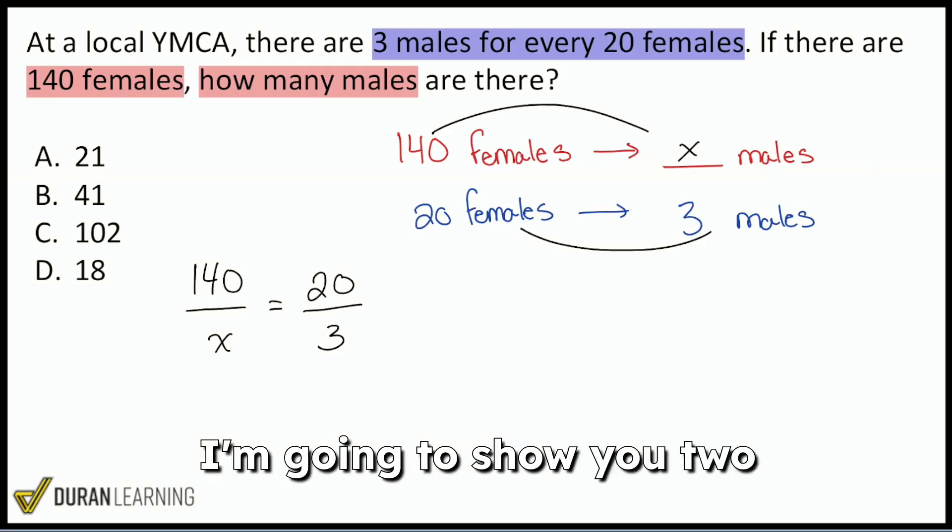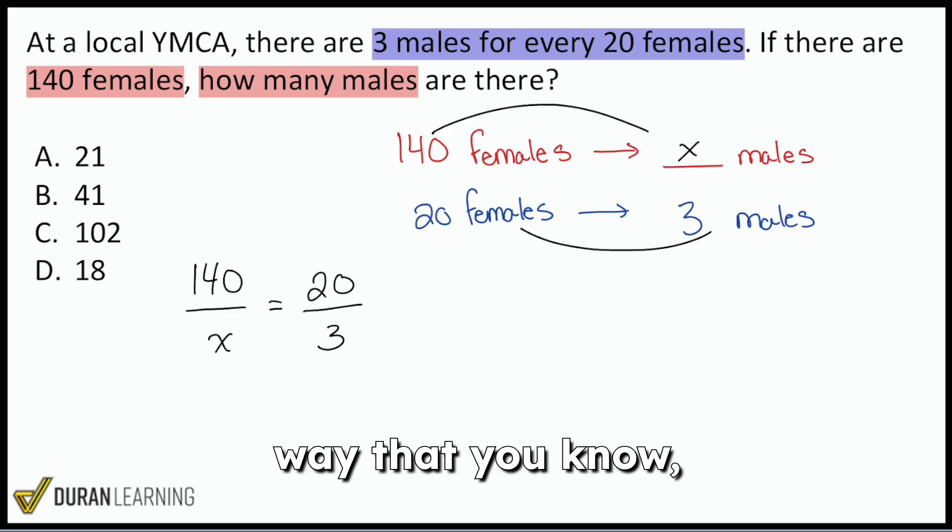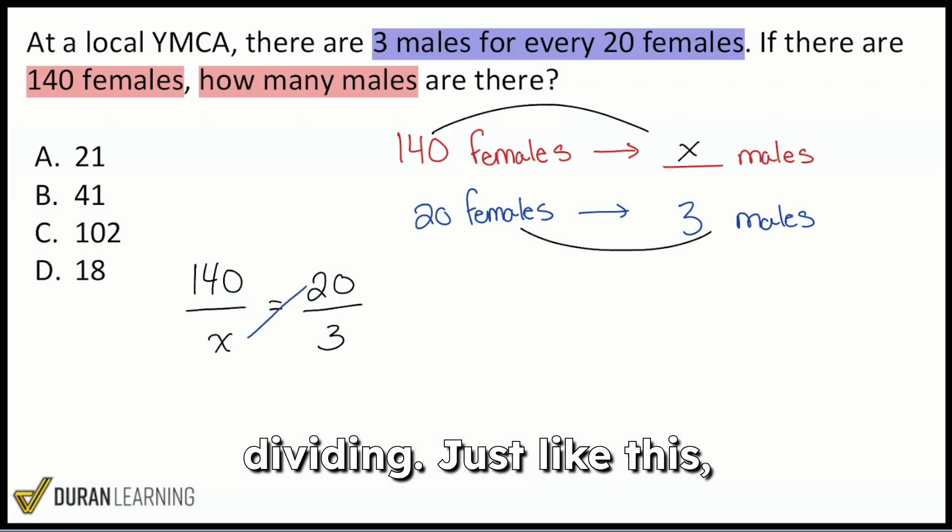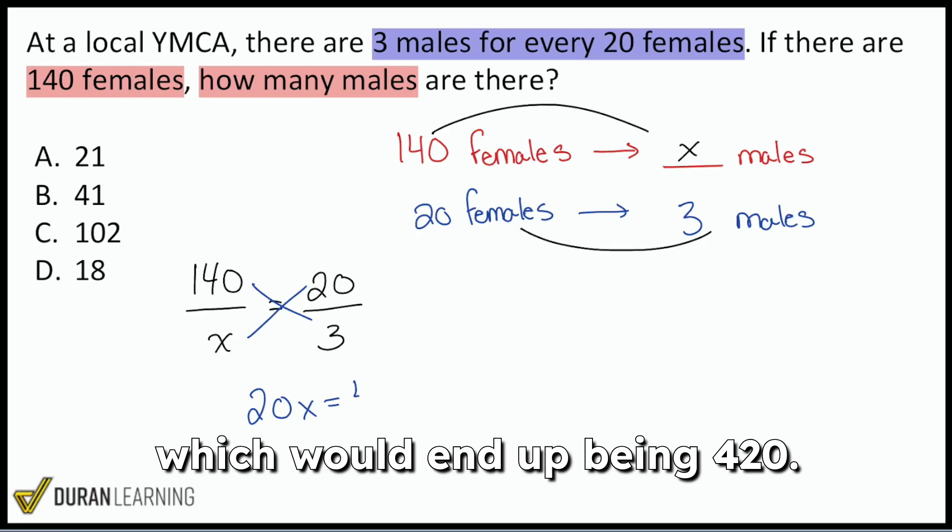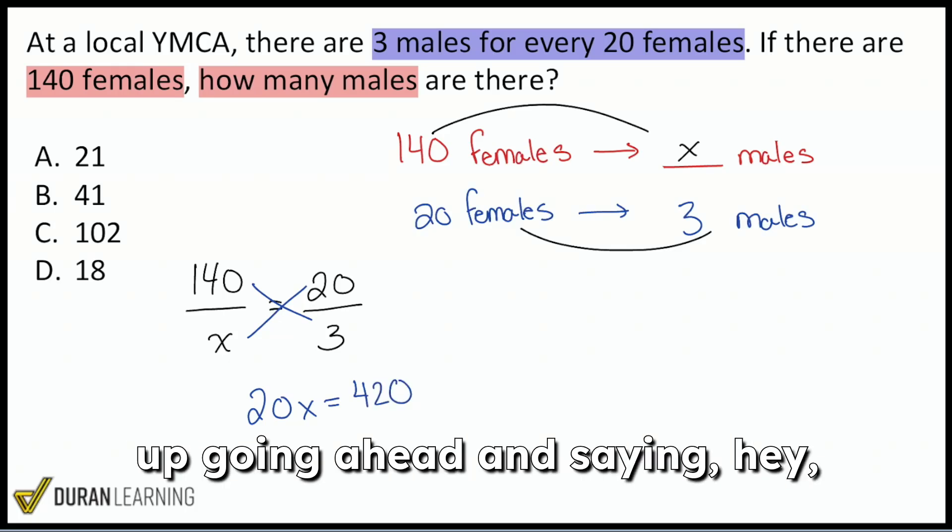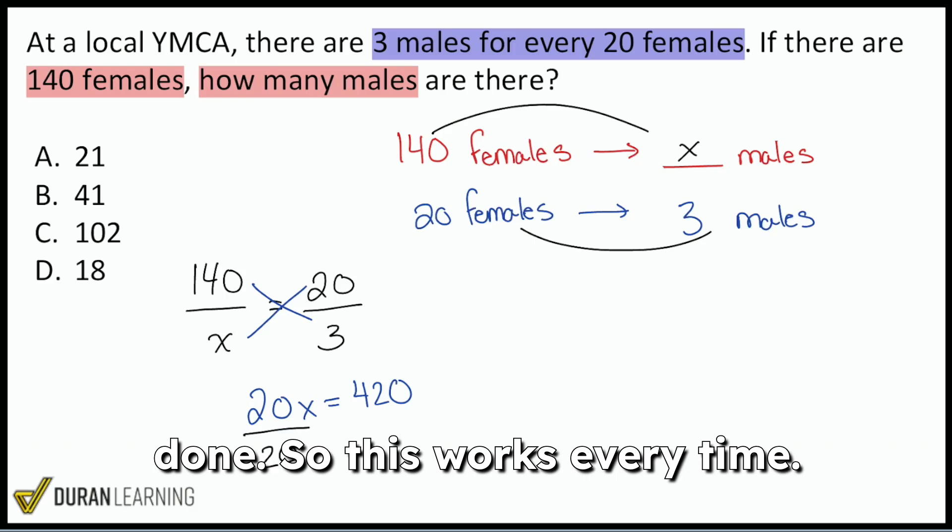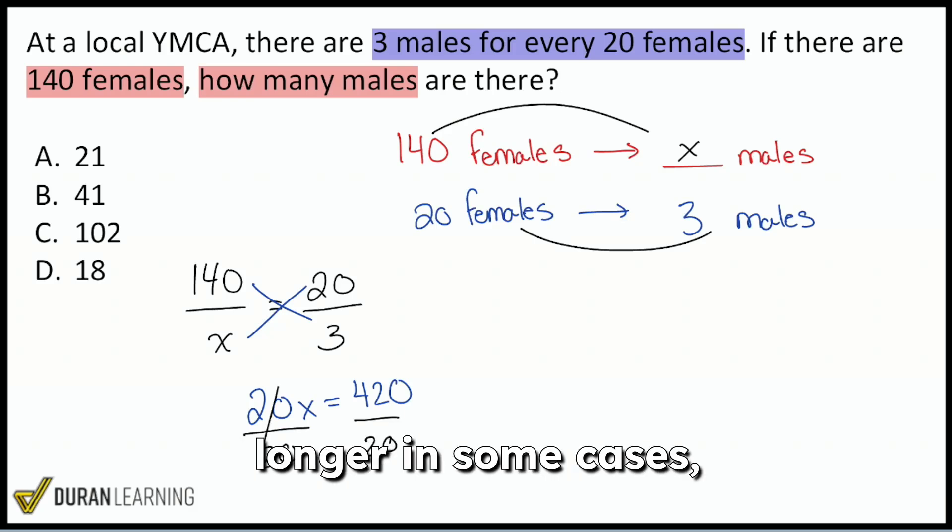And in tonight's class, I'm going to show you two different ways to solve proportions. One of them being the main way that you know, which is cross multiplying and dividing just like this, getting 20x equals 140 times 3, which would end up being 420. And then from there, we would end up going ahead and saying, hey, let's divide by 20. And we're done. So this works every time, it just might take you a little longer in some cases. But here we'll have x equals 21.